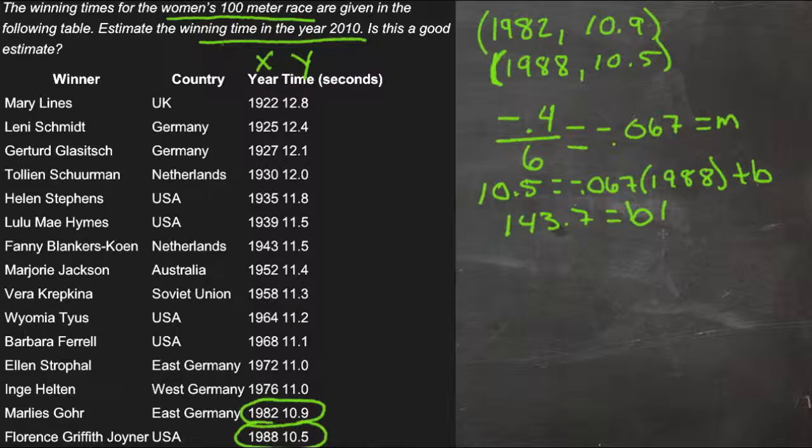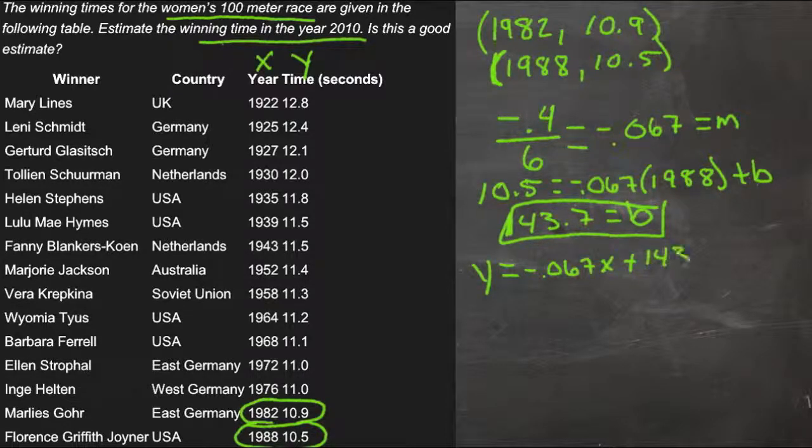So now we have our b and we have our m, so we can write our equation. So our equation then is y equals negative 0.067x plus 143.7.